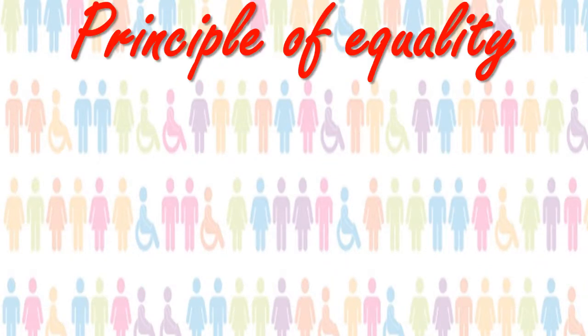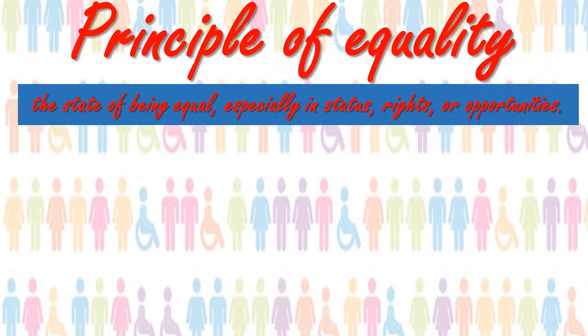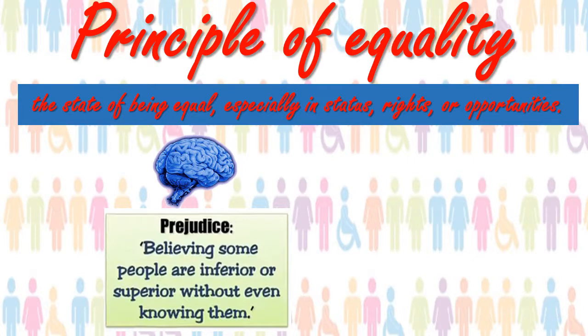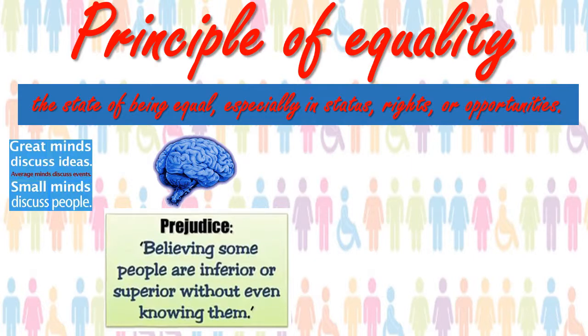The principle of equality basically means the state of being equal, especially in status, rights or opportunities. Prejudice comes from the mind, believing that some people are inferior or superior without even knowing them. This is something that's going to stop the principle of equality from taking place.